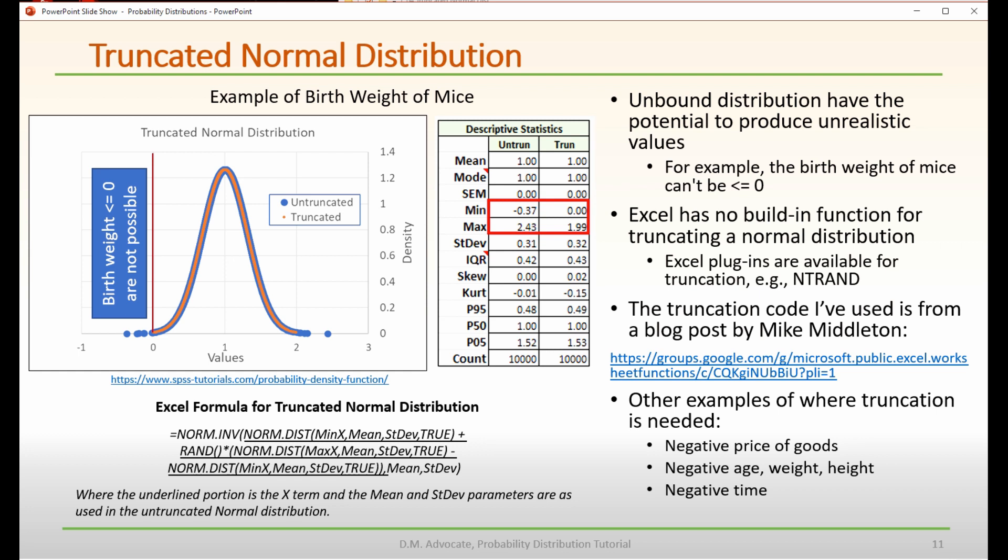Excel has no function for truncating a normal distribution. There are plugins that you can download that will do this for you, such as NT-RAND.